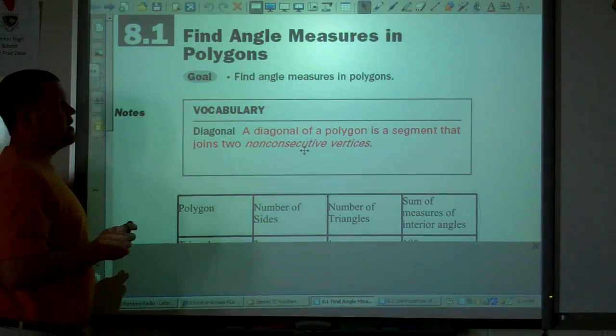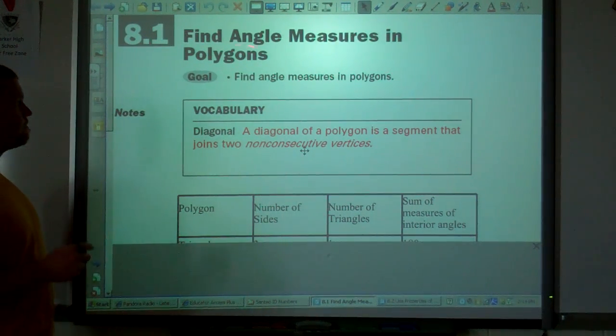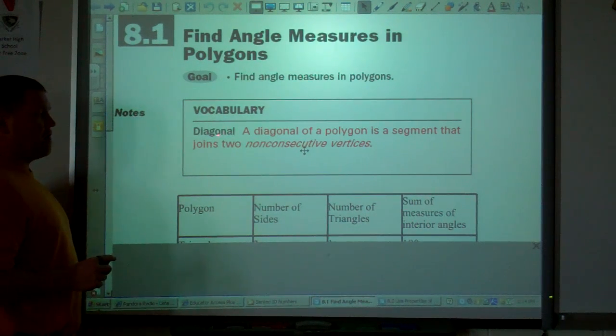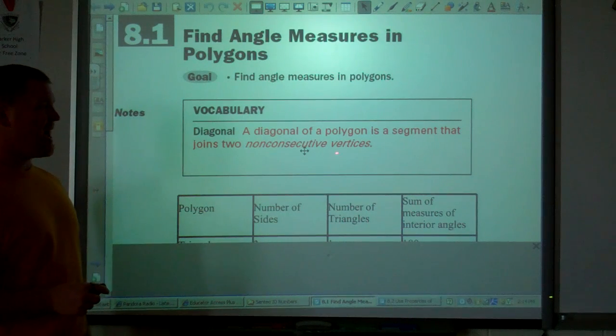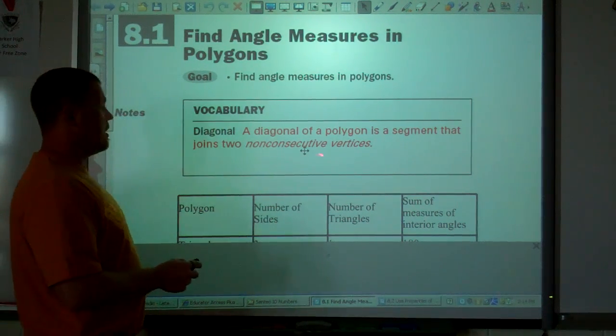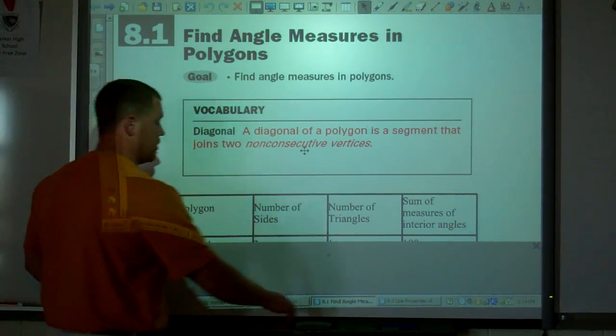Alright, today we're talking about finding the angle measures in a polygon. First, a diagonal. A diagonal of a polygon is a segment that joins two non-consecutive vertices. Non-consecutive, they're not next to each other.